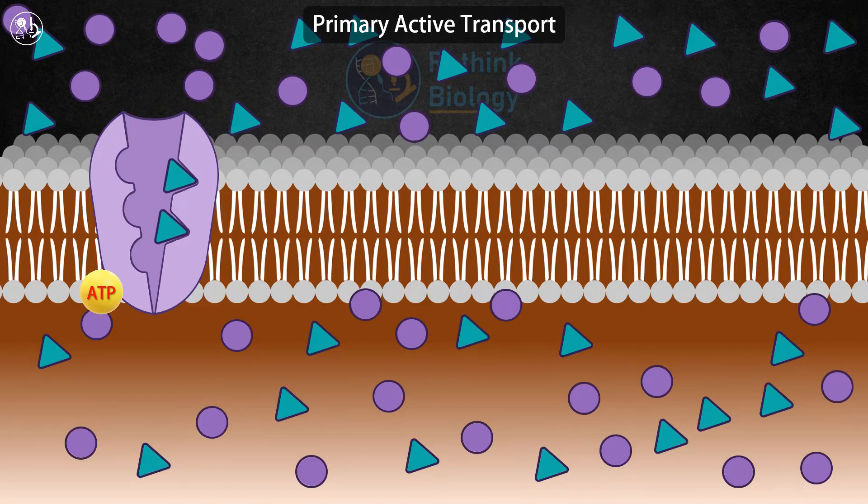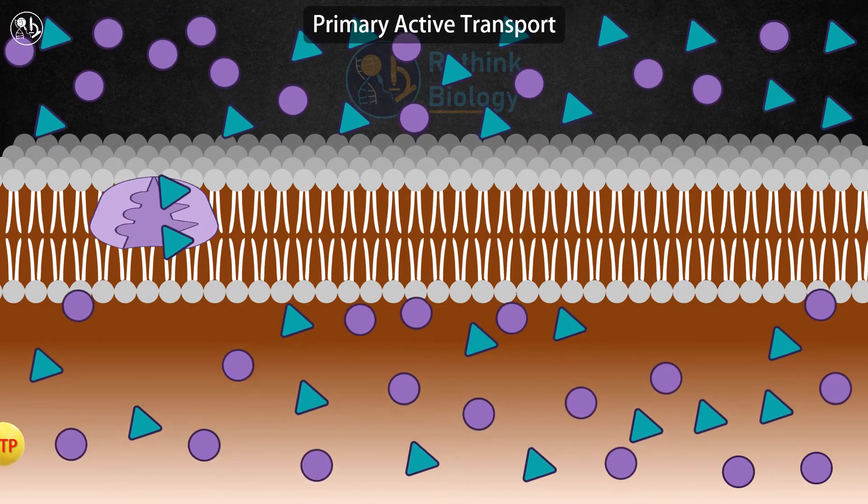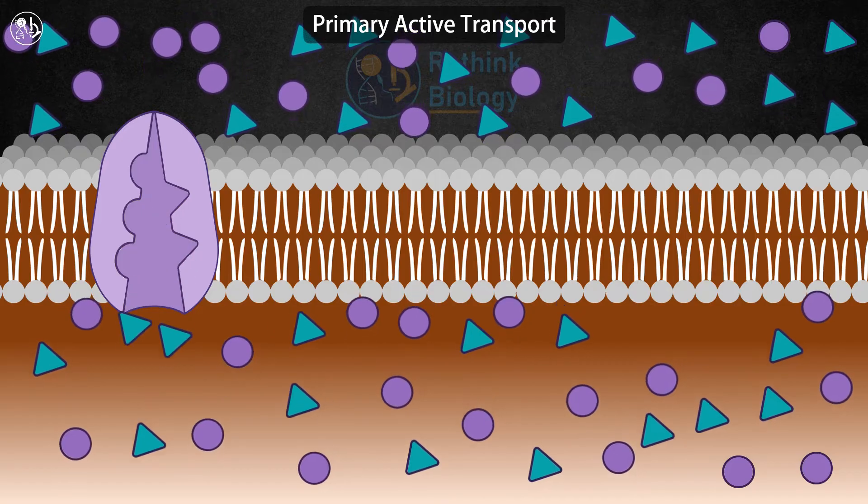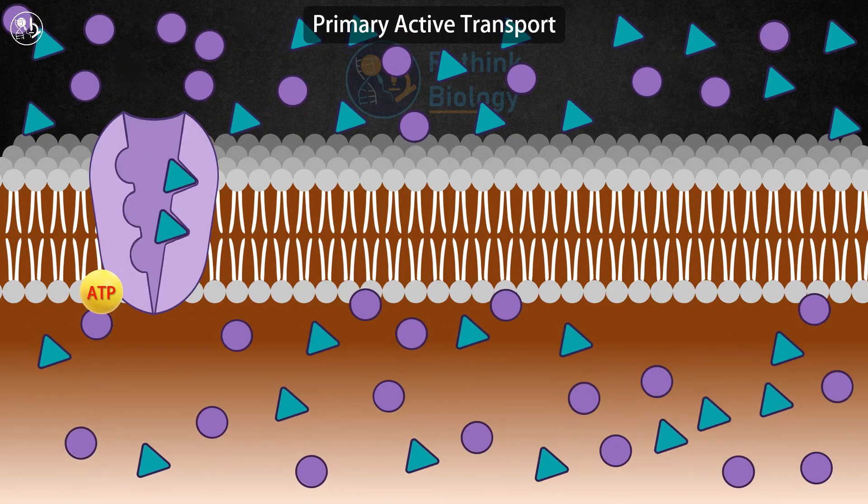At this point, two potassium ions bind to the pump, and the release of the inorganic phosphate causes the pump to change shape again, delivering the potassium ions to the inside of the cell. The pump works in cycles.